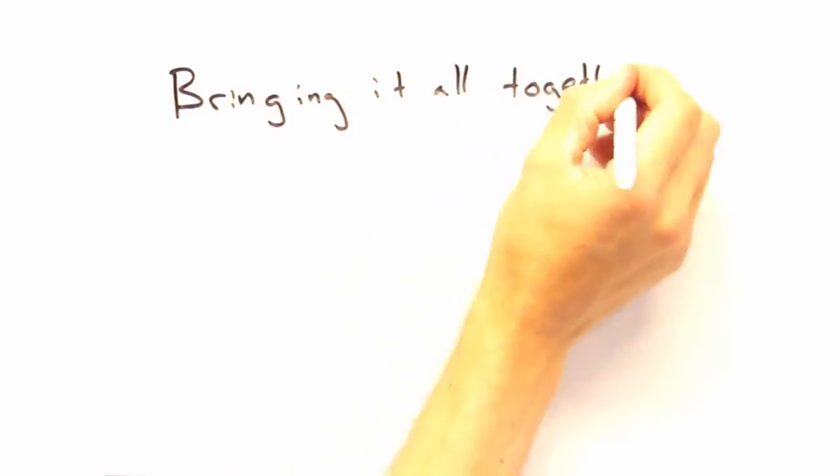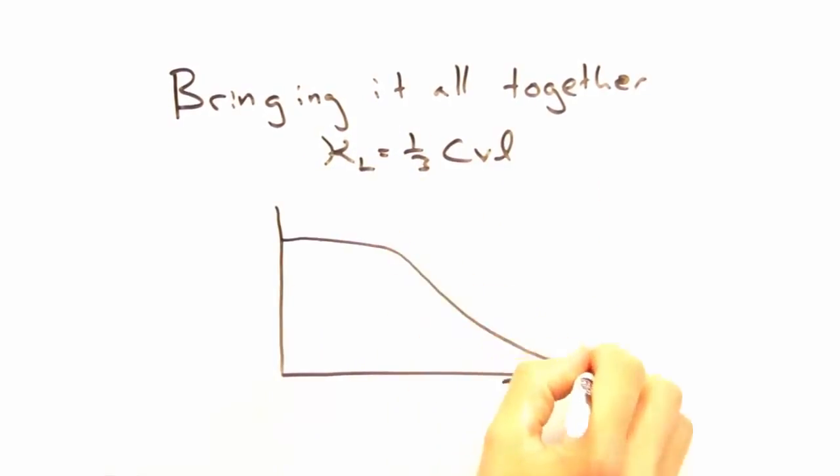So now that we have each piece—heat capacity, velocity, and mean free path—let's bring it all together into thermal conductivity as a function of temperature.